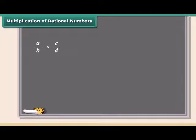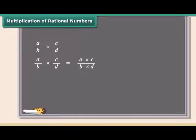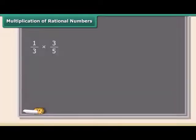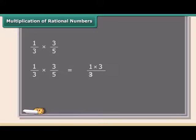Now we will study multiplication of rational numbers — this is the easiest one. To multiply two rational numbers, just multiply the numerators and denominators separately. For example, we will multiply 1 by 3 and 3 by 5. First multiply the numerators, then multiply the denominators. This fraction can be further simplified to 1 by 5.